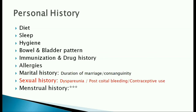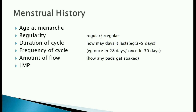Under sexual history, we ask if there is any pain or bleeding during coitus and the details of contraceptive use. We collect a detailed menstrual history: the age at menarche, if the cycles are regular, the duration and frequency of the cycles, the amount of blood flow, and the LMP.